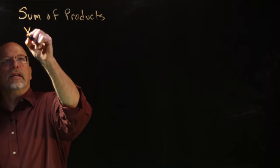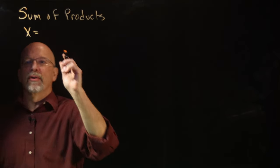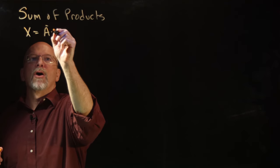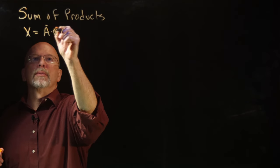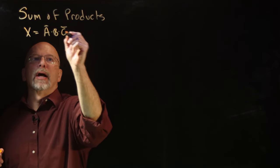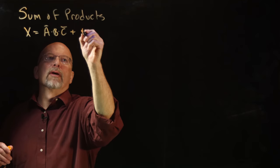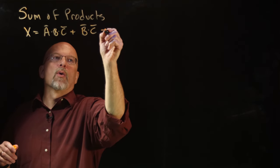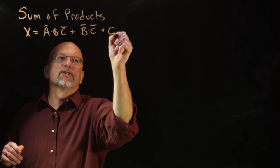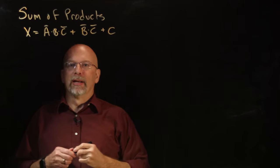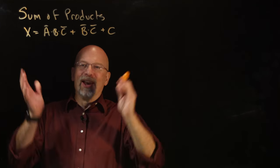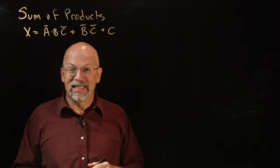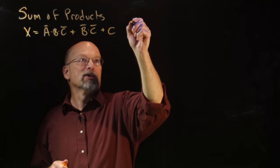I'm just going to come up with some sort of a sum of products expression here. How about A-bar ANDed with B ANDed with C-bar, ORed with B-bar and C-bar, ORed with C. I don't know what that made — I just made that up. Let's go ahead and see what sort of a truth table it gives us.